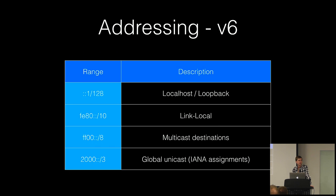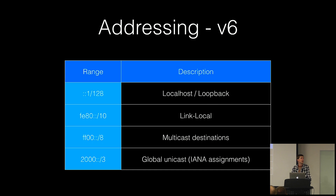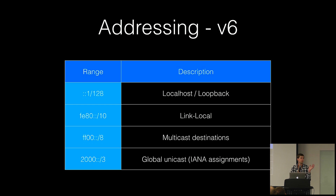In IPv6 there's a lot more, but a few interesting ones: loopback is just ::1/128. The link-local equivalent to 169.254.0.0/16 is fe80::/10, though in practice it's fe80::/64. IPv6 multicast has an entire /8. Every globally routable unicast address on the IPv6 internet is assigned out of 2000::/3, which runs from 2000:: all the way up to 3fff:ffff:ffff::/whatever.